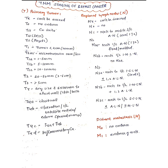The primary tumor staging is divided into several categories. TX means the primary tumor cannot be assessed. T0 means there is no evidence of primary tumor. Tis is carcinoma in situ — the carcinoma has not invaded the basement membrane — and it could be DCIS or Paget's disease.